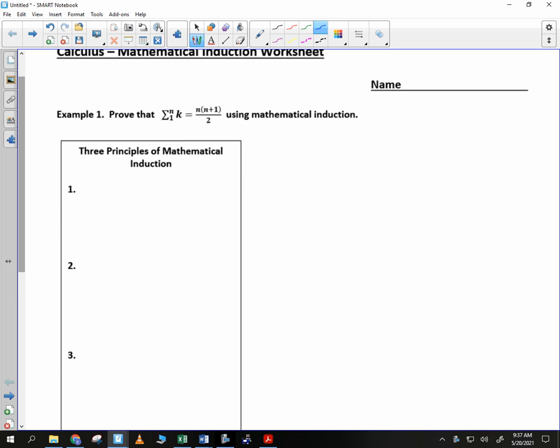Okay, it says prove that the sum from 1 to n of k is equal to n times n plus 1 over 2. You first need to understand what that means.